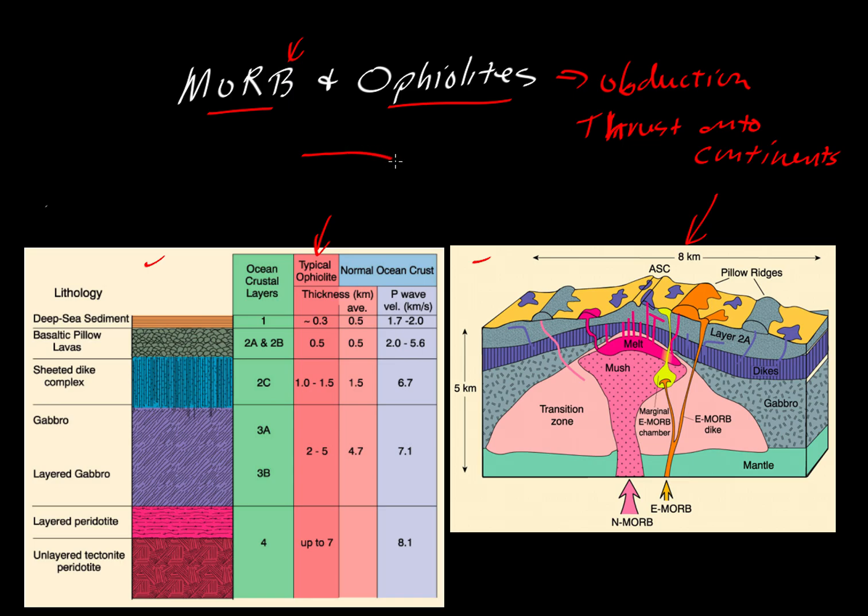If we have oceanic crust here and then we have some continental crust here, it's possible a little flake of that material might get sandwiched and glued onto the edge of the continent. We refer to that as obduction where the material gets thrust onto the continent rather than subduction where it sinks downwards below. These rare cases of obduction of ophiolitic material give us an interesting geological record of what the oceanic crust might look like.